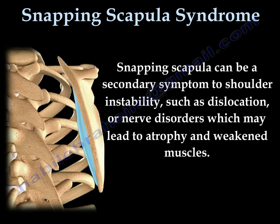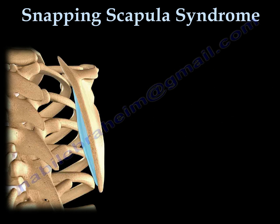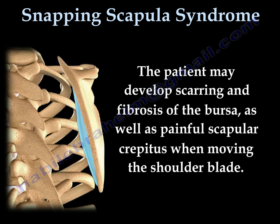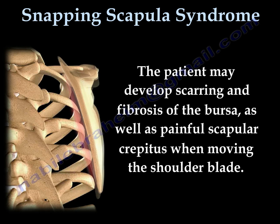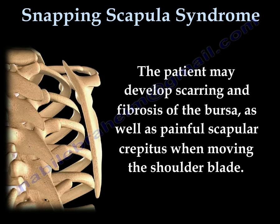Snapping scapula can also be a secondary symptom to shoulder instability and dislocation, or nerve disorder that leads to atrophy and weakness of the muscle. The patient may develop scarring and fibrosis of the bursa, as well as a painful scapular crepitus when moving the shoulder blade.